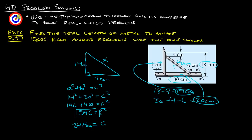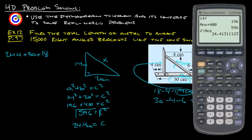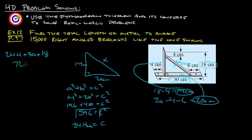The total length to make one bracket is going to be 24.4 plus the 30 down here plus the 18 right here. If we add that all up, 24.4 plus 30 plus 18 gives us 72.4 centimeters per bracket.